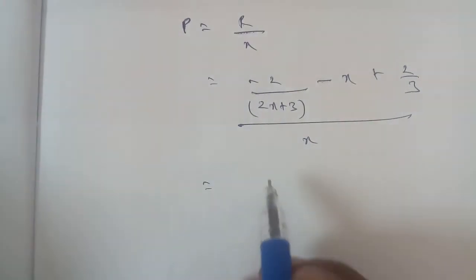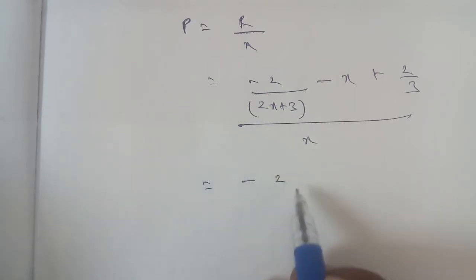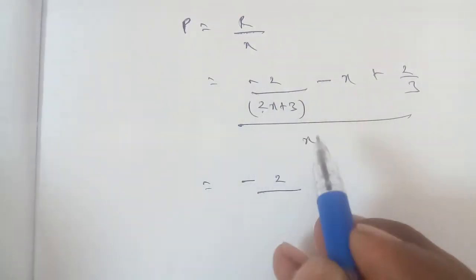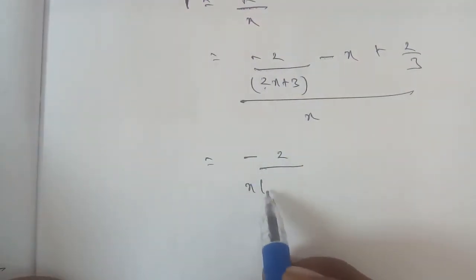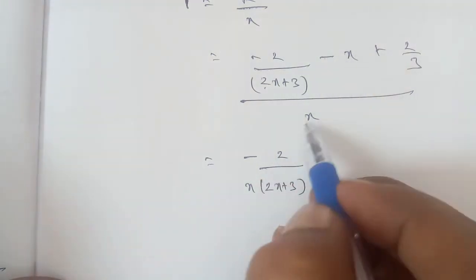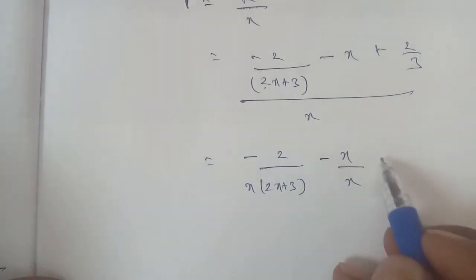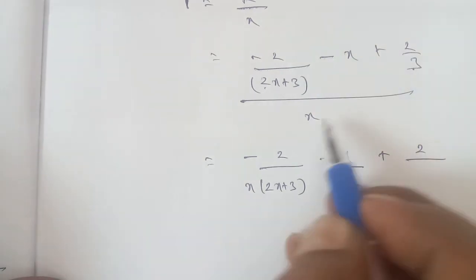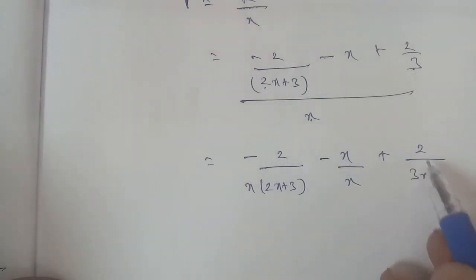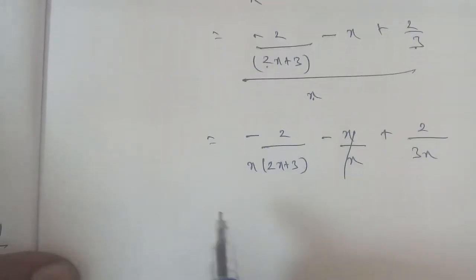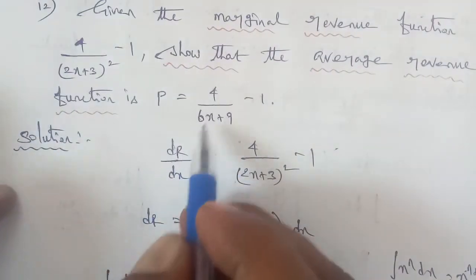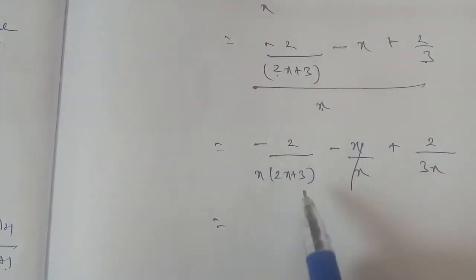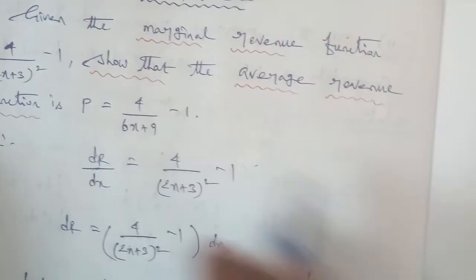Splitting and simplifying: p equals minus 2 divided by x(2x plus 3) minus x by x plus 2 by (3x). Cancelling x terms and combining the denominator, 2x times 3 gives 6x and 3 times 3 gives 9. After cancellation, we get 4 by (6x plus 9) minus 1.